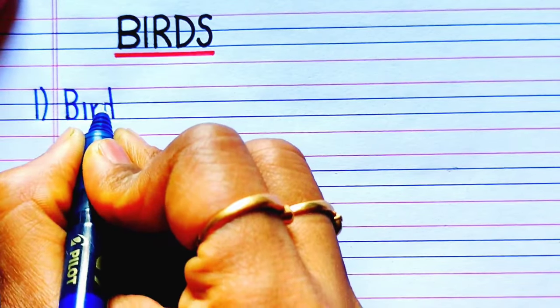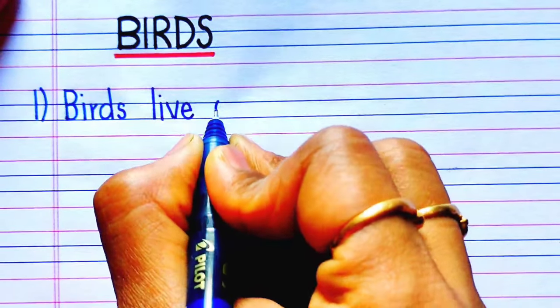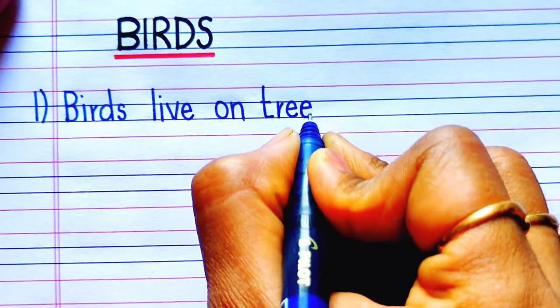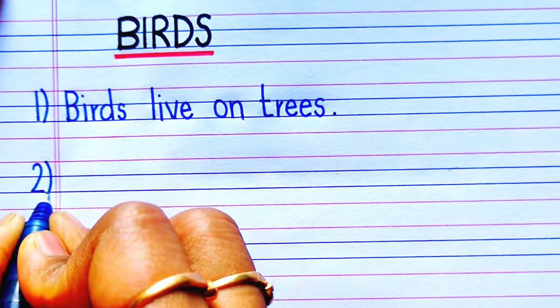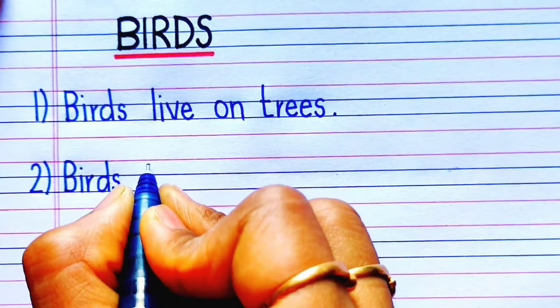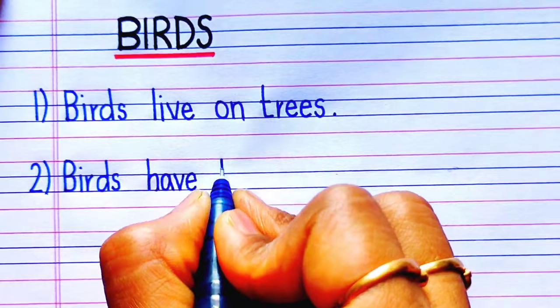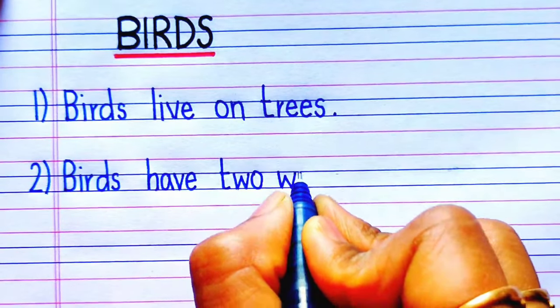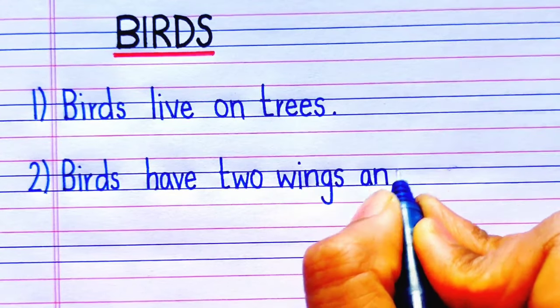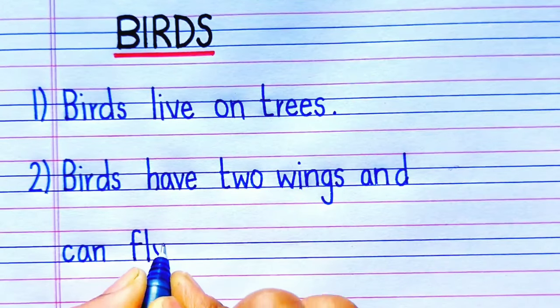The first sentence is: birds live on trees. The second sentence is: birds have two wings and can fly.